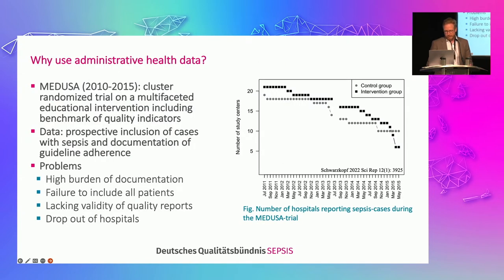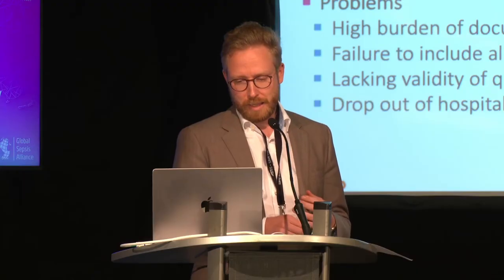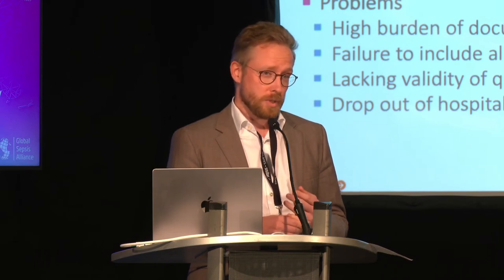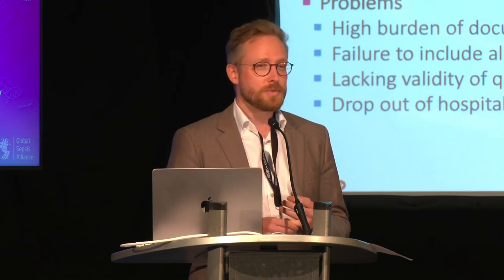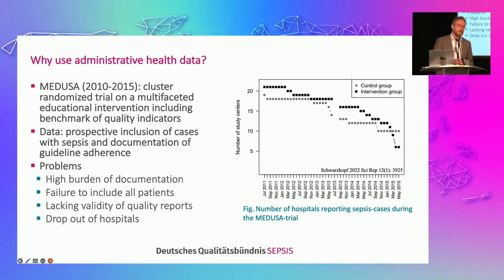As a methodologist, I want to focus on a methodological lesson: why should you use administrative data to measure quality of care? This is a lesson we learned about 10 years ago when we did a cluster randomized trial evaluating a multifaceted educational intervention. Part of this intervention was a benchmark of quality indicators, and local clinicians in the 40 participating hospitals were asked to prospectively include every patient with sepsis and document clinical data on guideline adherence. We soon discovered problems — especially for small hospitals, this imposed a high burden of documentation. Physicians failed to include all patients, sometimes only documenting a few cases per night shift, leading to lacking validity of the quality reports. Over time, many hospitals dropped out from the study because of this high burden of participation.